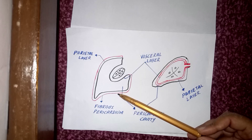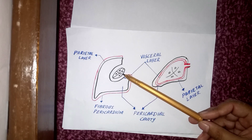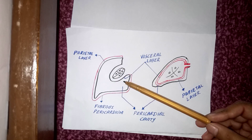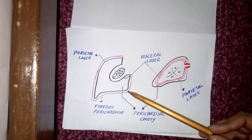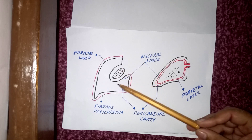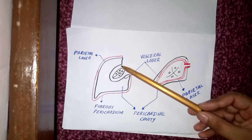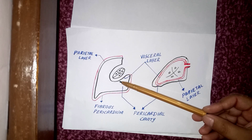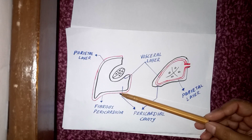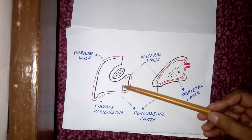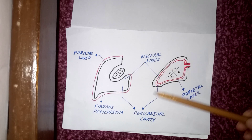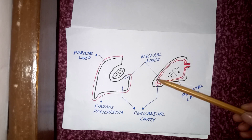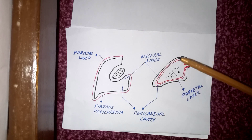The layer just adjacent to the fibrous pericardium is the parietal layer. When this parietal layer goes near the heart, it folds back on itself and forms the visceral layer around the heart. So the parietal layer and the visceral layer together make up the serous pericardium.